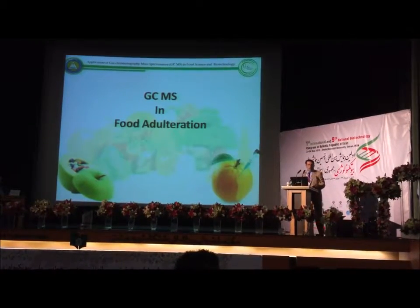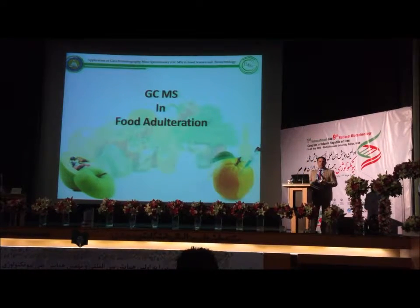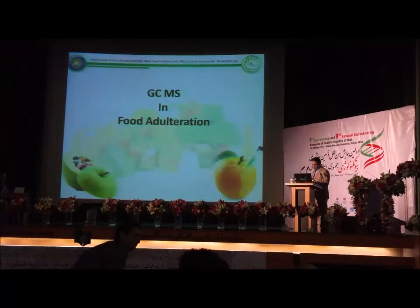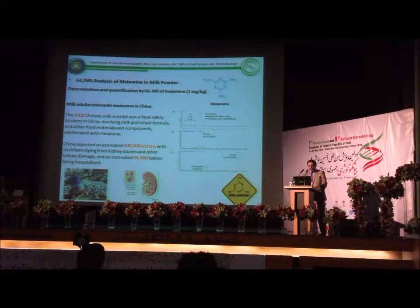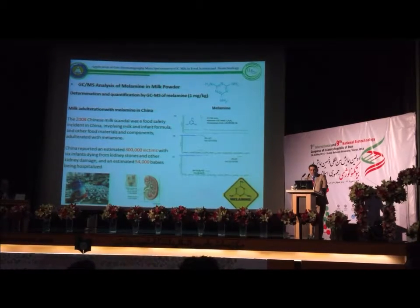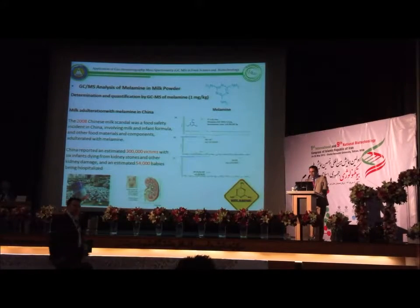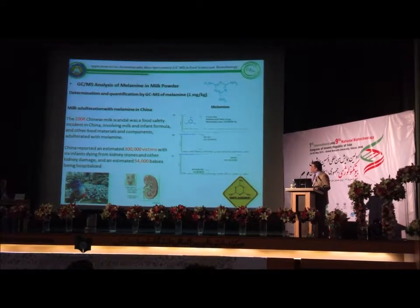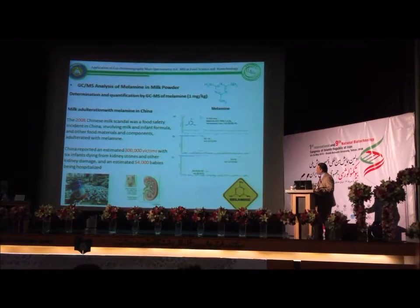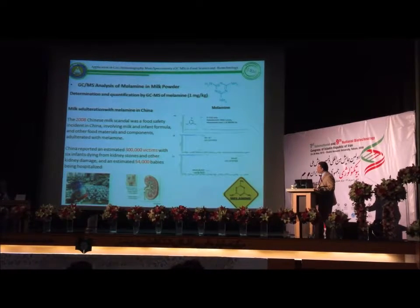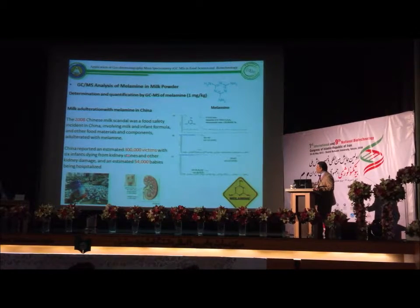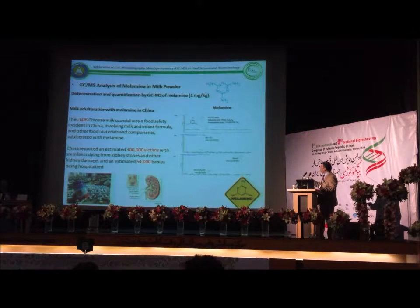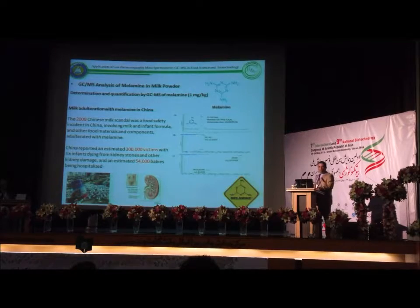I am focusing on food science, essential oils, and fatty acids. GC-MS is used widely in food adulteration analysis. For example, GC-MS analysis of melamine in milk powder — this material is very dangerous and harmful. In Chinese milk contamination, there were 300,000 patients with six infants dying from kidney stone damage and 54,000 babies hospitalized because of melamine contamination. Melamine can be detected by GC-MS with a small derivatization step.